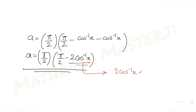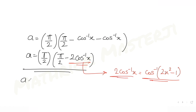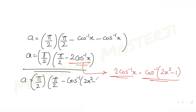Using the identity 2cos⁻¹x = cos⁻¹(2x² − 1), I get a = (π/2)(π/2 − cos⁻¹(2x² − 1)). Taking π and 2 to the other side gives 2a/π = π/2 − cos⁻¹(2x² − 1).